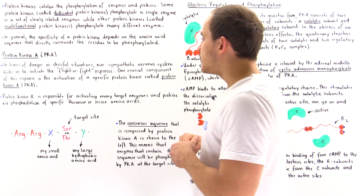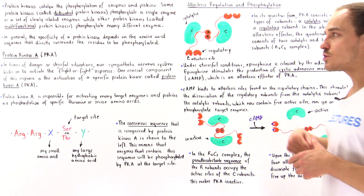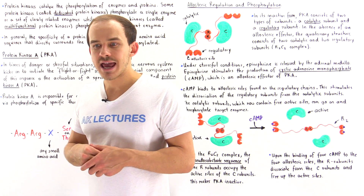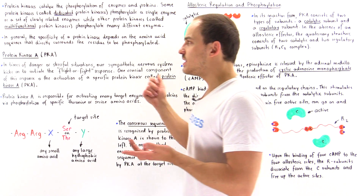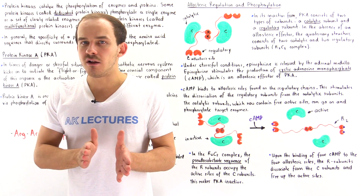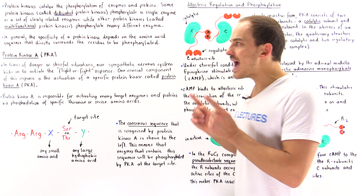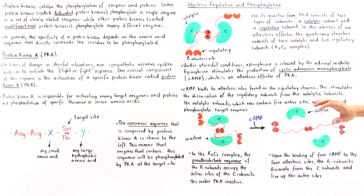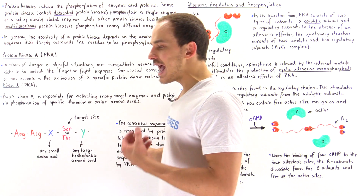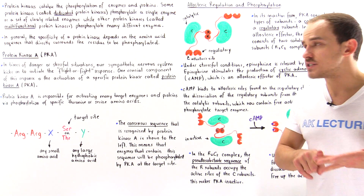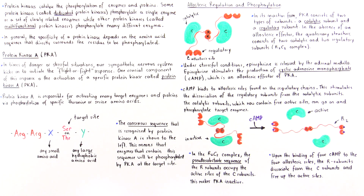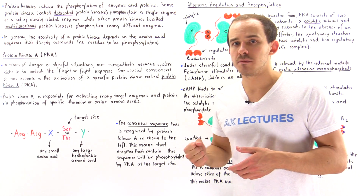Earlier we said that the cyclic AMP molecule binds and activates protein kinase A. What exactly is the quaternary structure of PKA when it is not bound to cyclic AMP — that is, what is the inactive quaternary structure? In its inactive form, PKA consists of two types of subunits. Just like aspartate transcarbamoylase, ATCase, consists of catalytic and regulatory subunits, PKA also consists of catalytic and regulatory subunits.